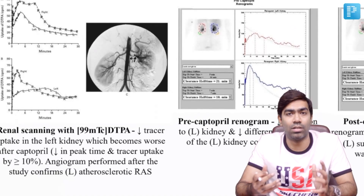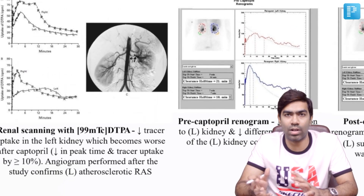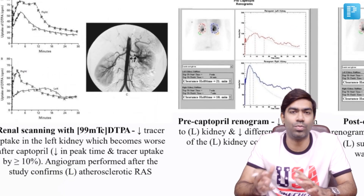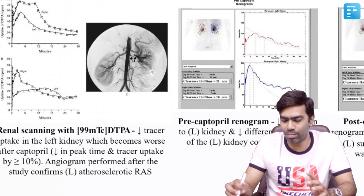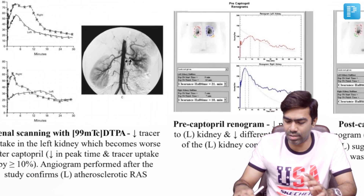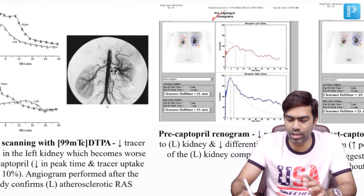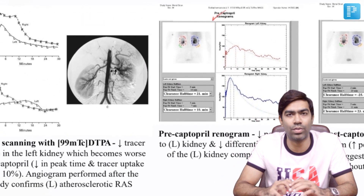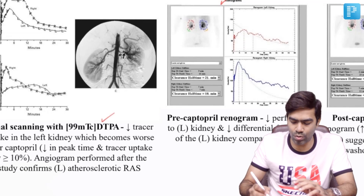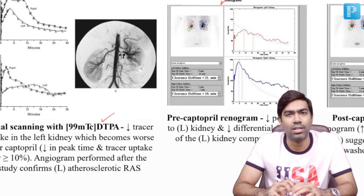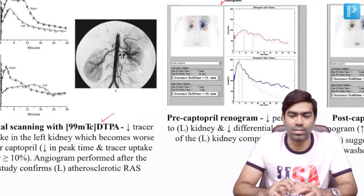We need to understand what is the renogram that you will get with DTPA tracer and MAG3 tracer. Even though MAG3 is the most commonly used tracer right now in the United States, DTPA is also used by certain scan centers.